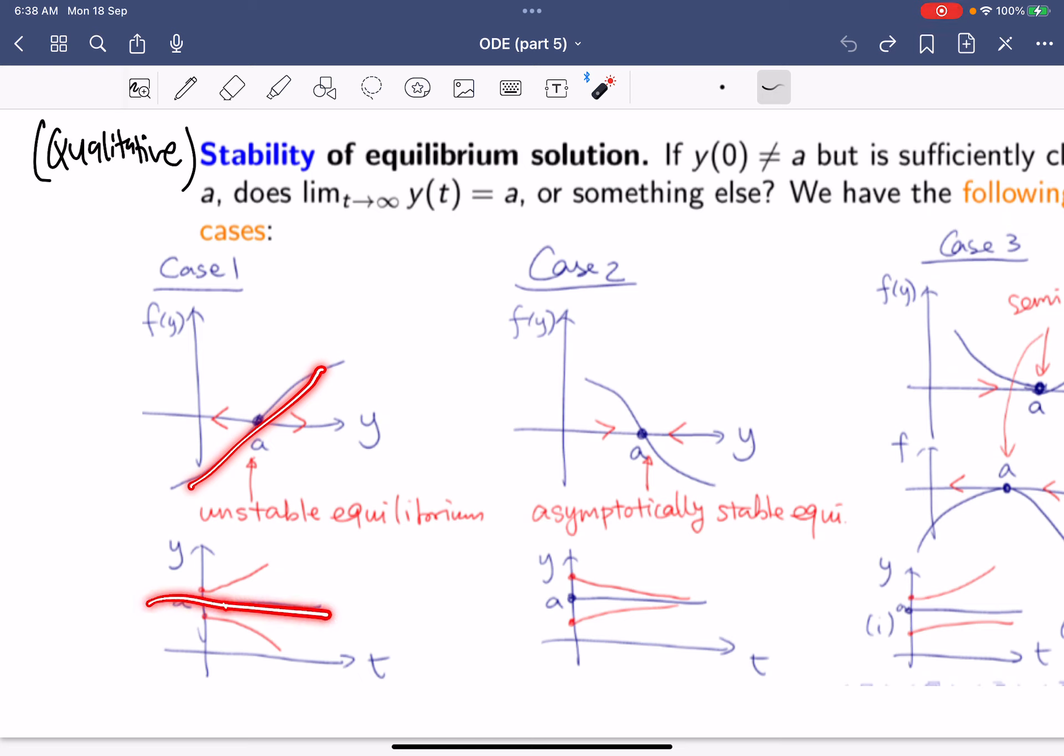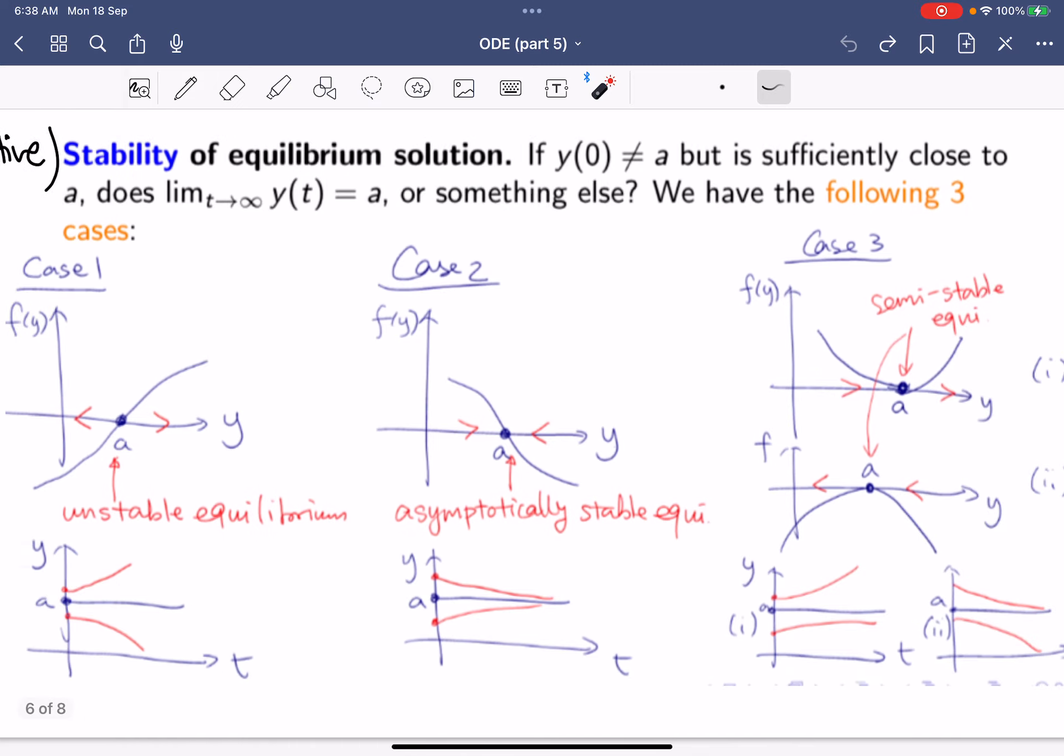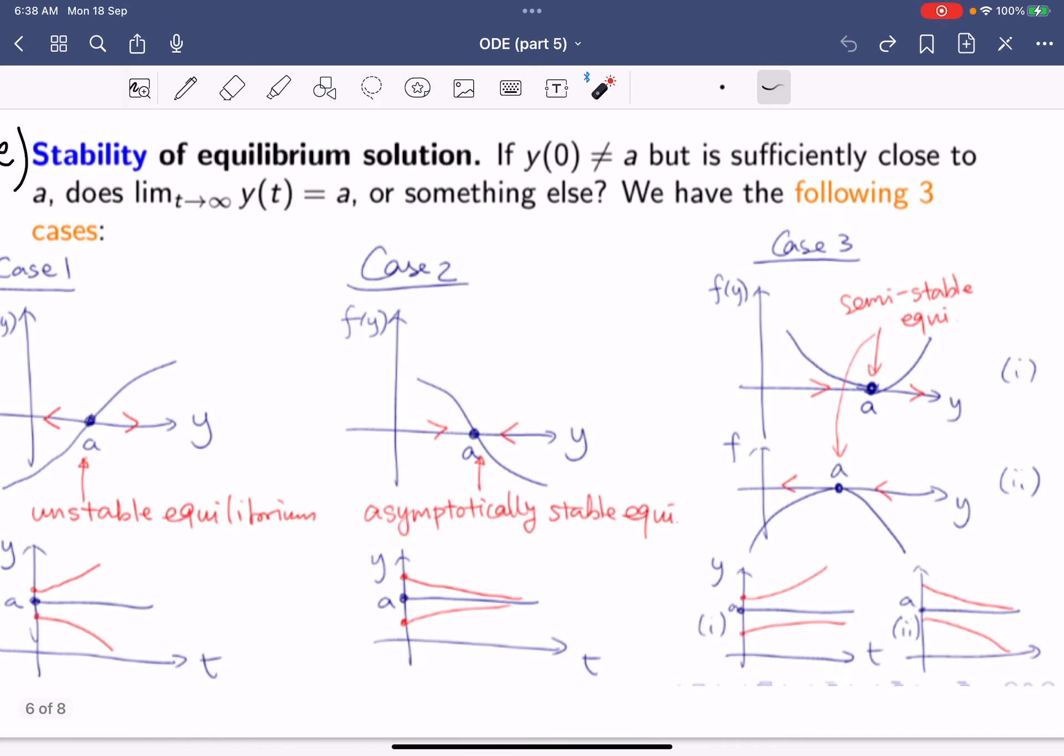When you draw the graph, it actually diverts away from a, so this means we call it an unstable equilibrium point. For case 2 is what we've already seen—we increase towards the value a, so then it will be called a simply stable equilibrium point.